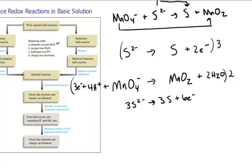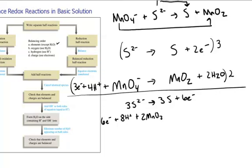That's the oxidation. I'm going to rewrite the reduction here. That's six electrons plus eight hydrogen ions plus two permanganate ions goes to two manganese oxide plus four water.